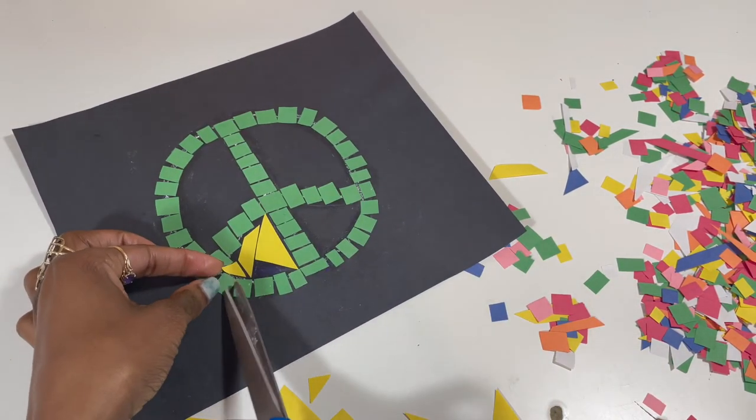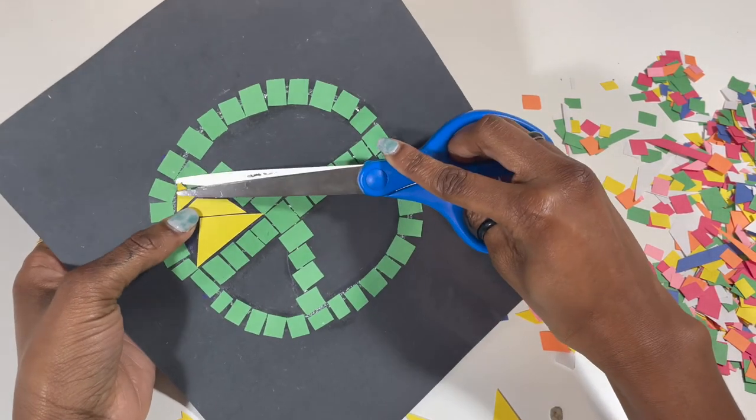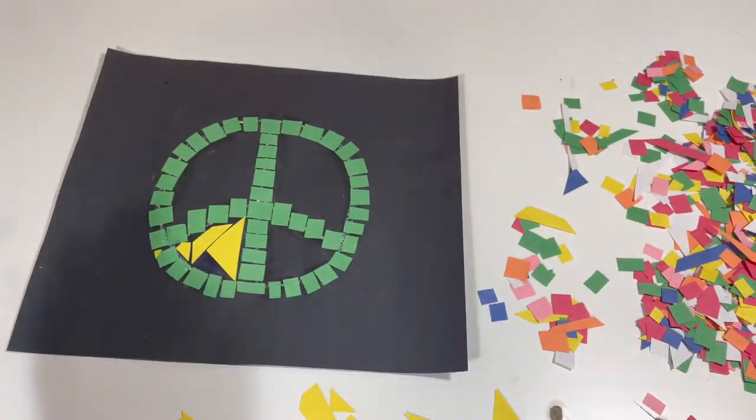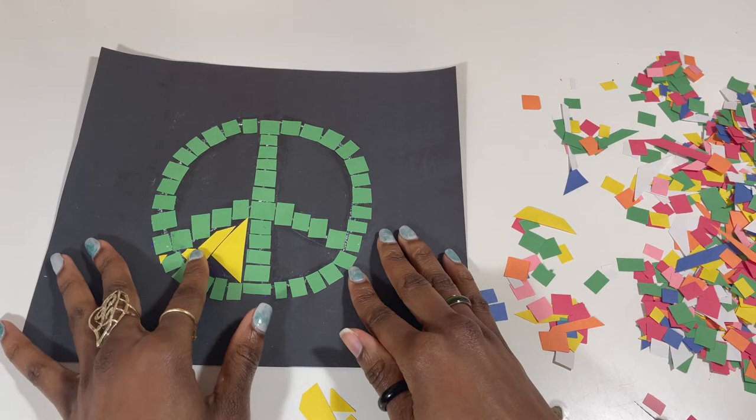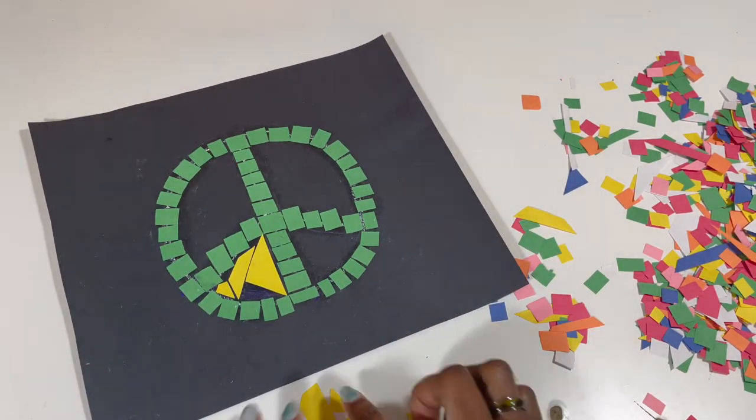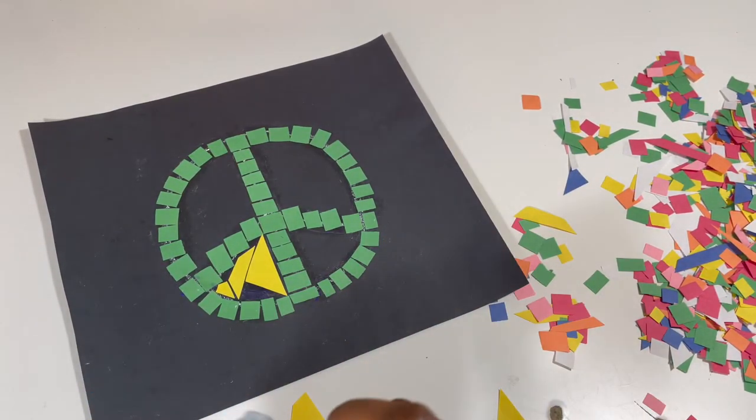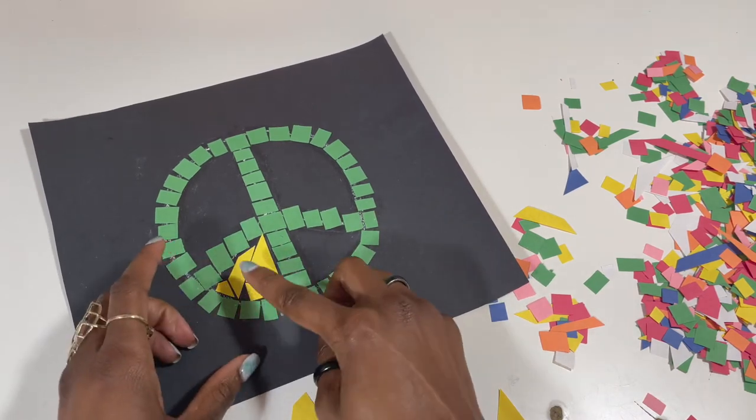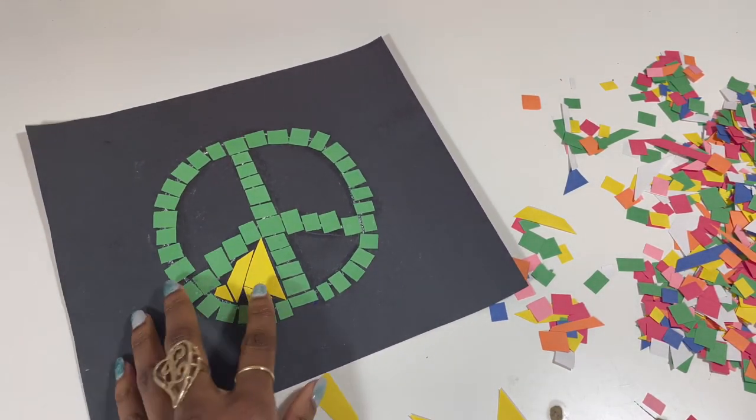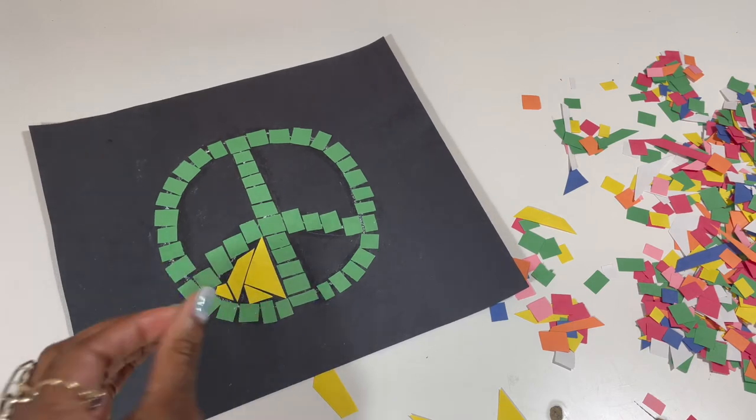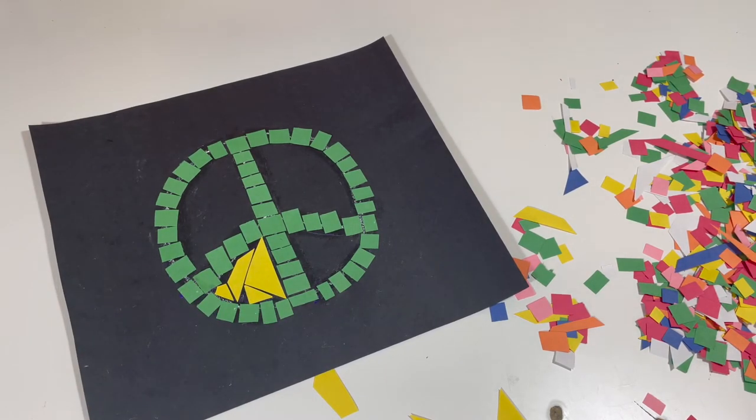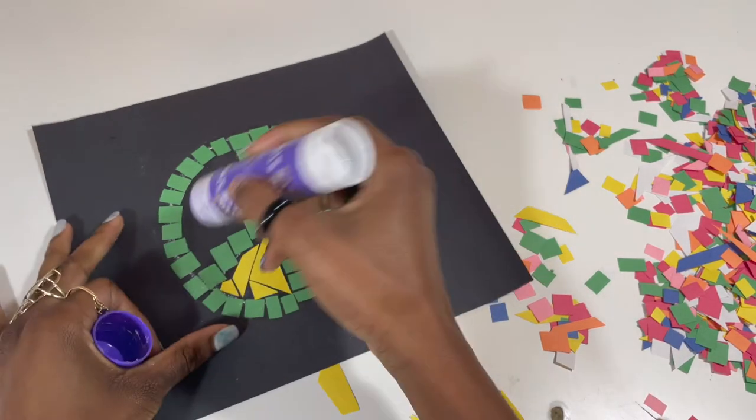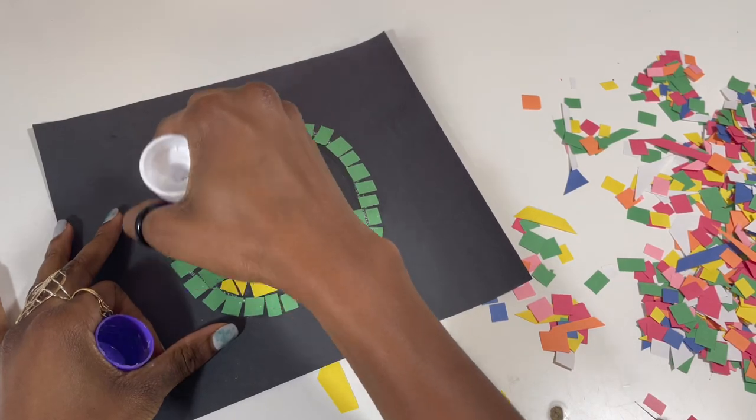So I kind of glue that part down and I use my scissors to adjust the size of it. So now you can see it fits a little bit better, but it still leaves me space. I'm just going to go through and do that on the rest of the section, going through and fitting all those pieces in.